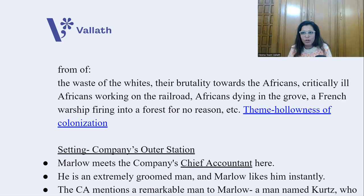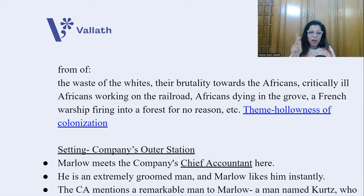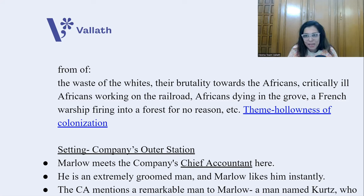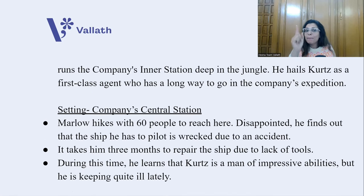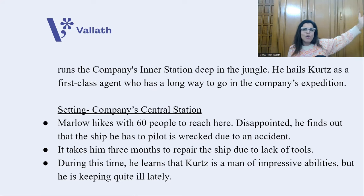After entering Africa, Marlow must reach his ship at the company's Central Station on the river. The company has three stations on the Congo River: Outer, Central, and Inner. Marlow first reaches the Outer Station, where he meets the company's chief accountant — an extremely groomed, smart man whom Marlow likes instantly. The chief accountant mentions a remarkable man named Kurtz, who runs the company's Inner Station deep in the jungle, hailing him as a first-class agent with a long way to go.